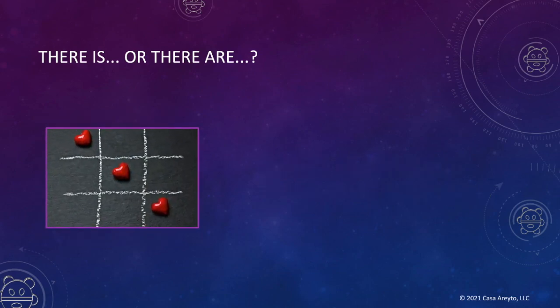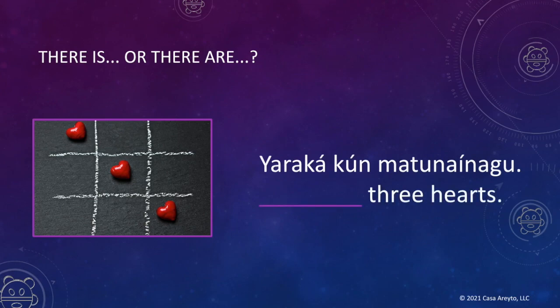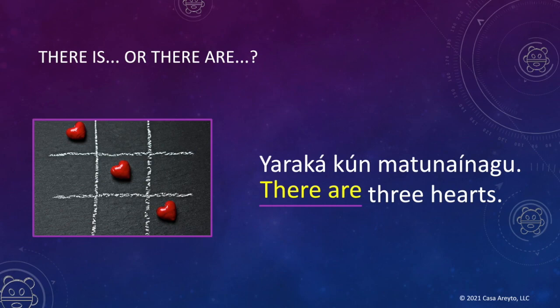Let's look at the next example — we've seen this picture before. Now let's look for context clues in the sentence. What word comes after yara ka? That's right — I see kun, three. So we fill in the blank with 'there are' because we're talking about two or more. Now let's read the sentence together: Yara ka kun matunai nāgu. There are three hearts.